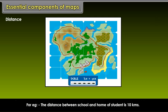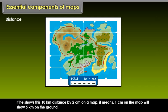For example, the distance between school and home of student is 10 km. If he shows this 10 km distance by 2 cm on a map, it means 1 cm on the map will show 5 km on the ground.